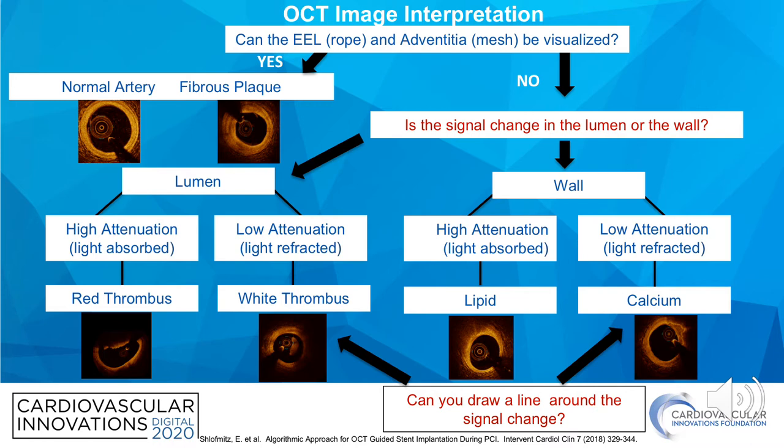That's because the OCT catheter — if you think of it as a red light — is unable to penetrate through the red blood cells and red thrombus. In the event there's signal change occurring in the wall of the vessel, you apply that same algorithm. If you can draw a line around the signal change, you know it's calcium. Whereas if you're unable to see the border of the signal change, you know the plaque has to be lipid.